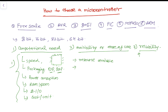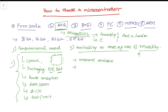Throughout this tutorial series we will be selecting the AVR microcontroller, specifically the ATmega32 and ATmega16, and we will be doing the coding in both Assembly and C. The topics we are going to cover range from introduction all the way through to ADC, timers, GPIO, and more.